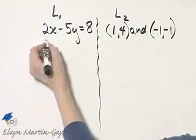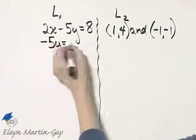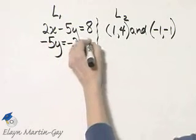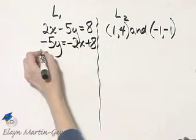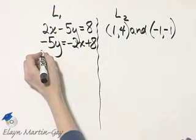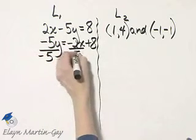To solve this for y, I'll subtract 2x from both sides. So I'll have negative 2x plus 8, and then I'll finish solving for y by dividing every single term by negative 5. I'm dividing through by negative 5.